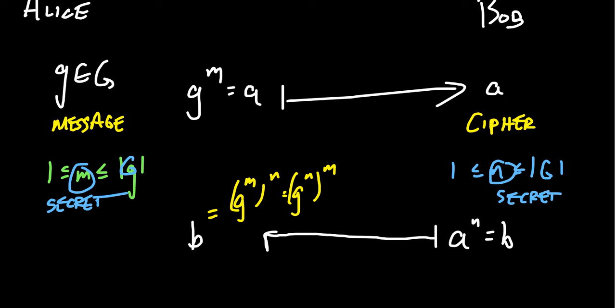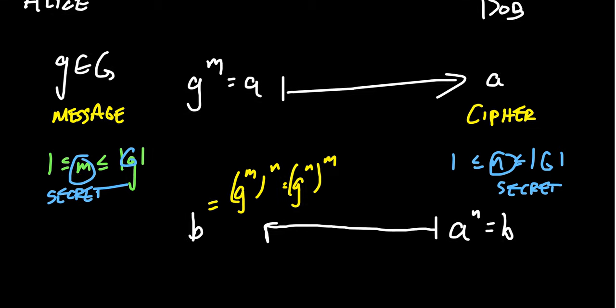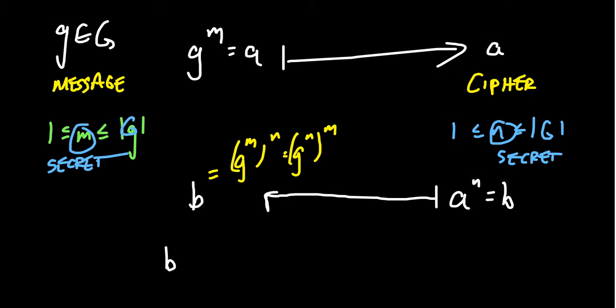This is the secret that Alice has. And this is the secret that Bob has. These are kept secret. These are not shared publicly. But this message a was shared publicly with everyone. So what then Bob does is he's going to take this element a, and he is going to compute a to the n power. Let's call that b. And then he sends it back to Alice so that Alice receives b. Now, we know that b is just g to the m to the n. In which case, because this is a group and we have associativity, this is the same thing as g to the n to the m. And so what Alice then can do is, because she knows what m is, she can apply the inverse. There's going to be some element m times d, which is congruent to 1 in this process. And so she then applies this element d here.